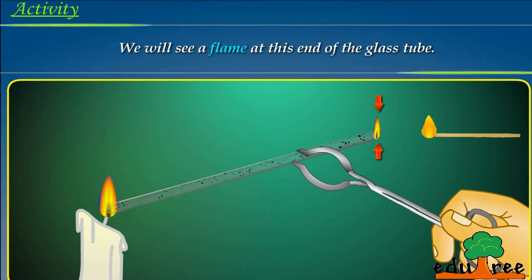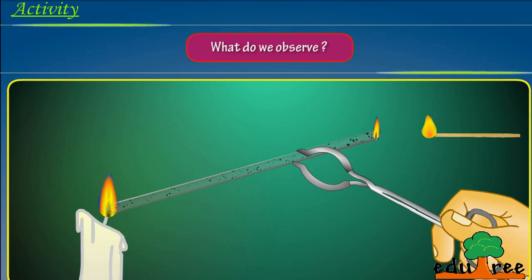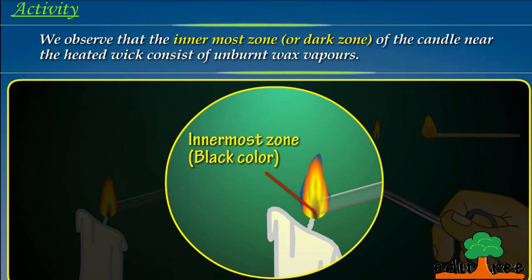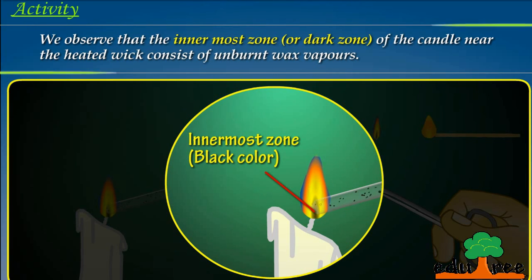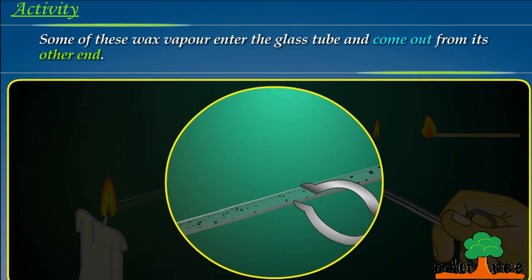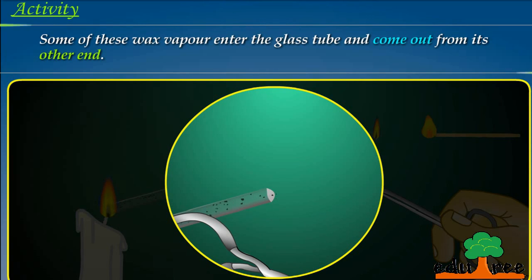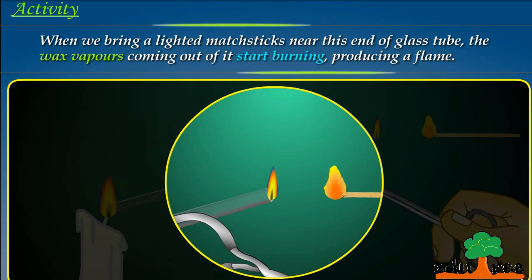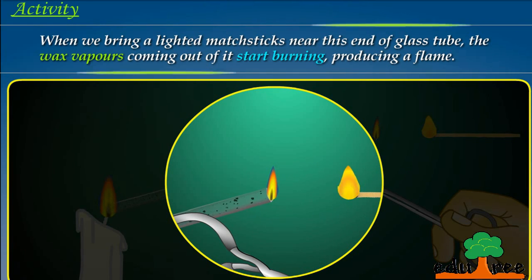We will see a flame at this end of the glass tube. We observe that the innermost zone or dark zone of the candle near the heated wick consists of unburnt wax vapors. Some of these wax vapors enter the glass tube and come out from its other end. When we bring a lighted matchstick near this end of the glass tube, the wax vapors coming out of it start burning, producing a flame.